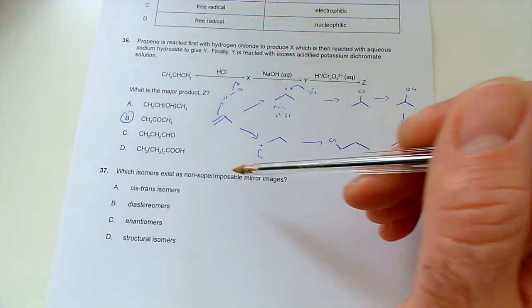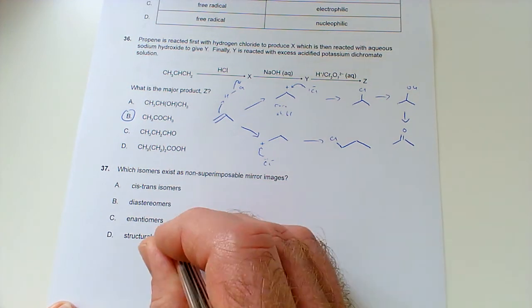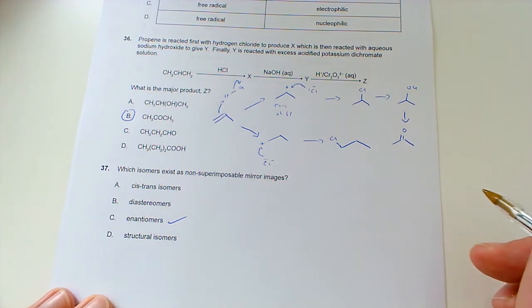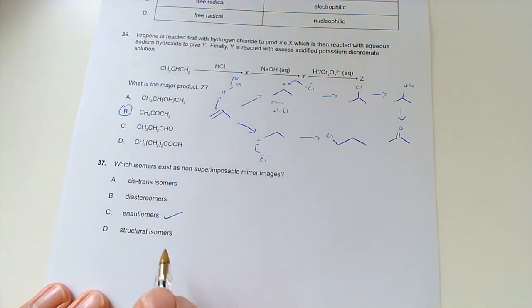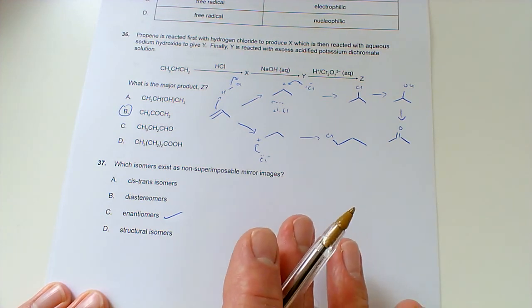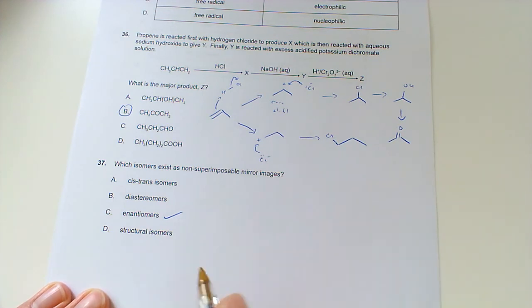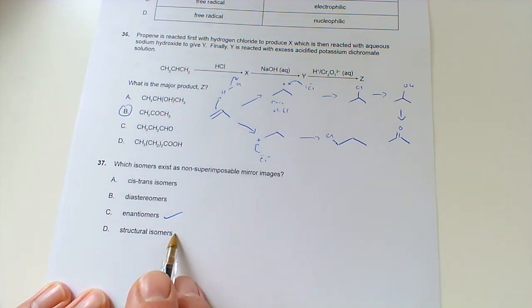Which isomers exist as non-superimposable mirror images? So, you need to recognize, right, that's enantiomers, basically. So, when you get a pair of enantiomers, that's your non-superimposable mirror images. Structural isomers are, you know, sort of, they don't differ on their 3D spatial arrangement as such. They've just got the atoms are joined up in a different sort of order. So, they're very different from each other.